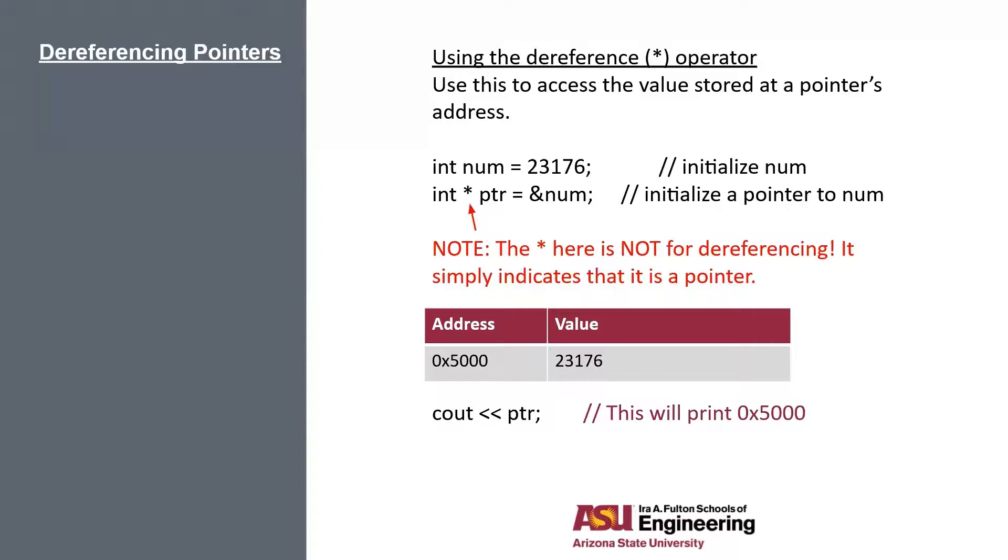If we print out our new pointer, remember pointers just hold memory addresses, we'll just print out 0x5000 because pointer was initialized to the address of num. The address of num happens to be 0x5000.